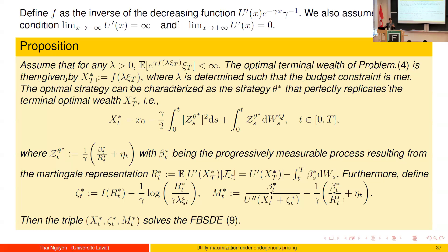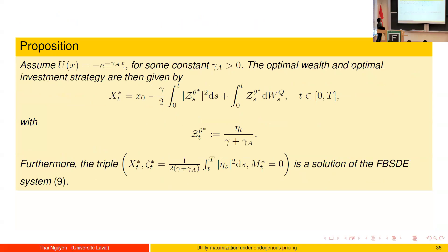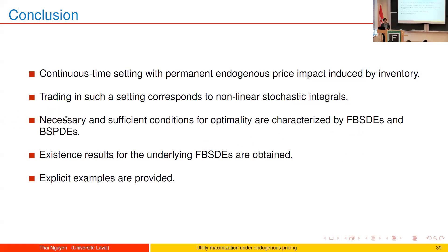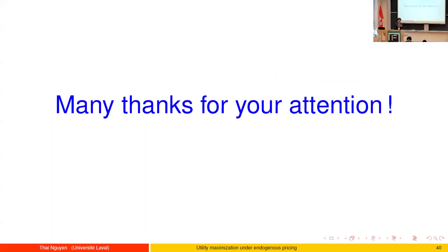Another example is when the agent also uses an exponential utility function — in this case the FBSDE has a somewhat simpler solution. To conclude: in this setting we adopt a permanent, non-just price impact model induced by inventory considerations, and we provide necessary and sufficient conditions for optimality along with illustrative examples.